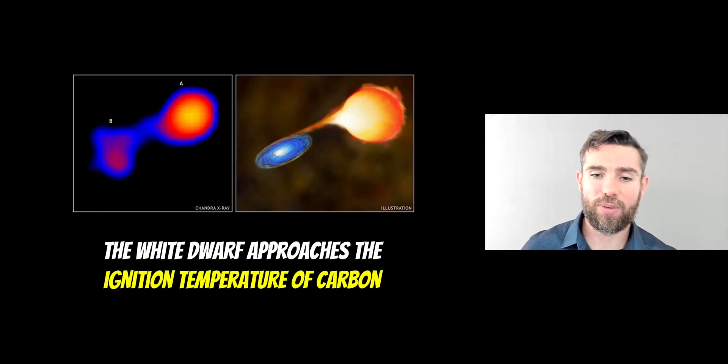So this is kind of what it might look like. You've got an illustration on the right where you've got the material being pulled off the red giant. It forms an accretion disk around the white dwarf which then basically falls onto it and it grows. And on the left hand side you've got an image taken by the Chandra X-ray telescope where you can see that there's material being exchanged between the two stars, where A would be your red giant and B would be your white dwarf and the accretion disk.